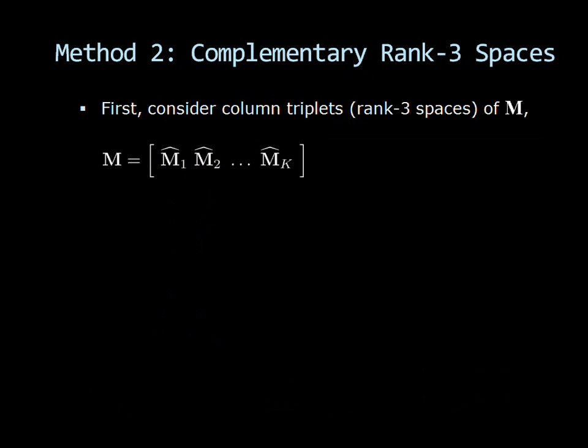To address this problem, we introduce a second representation of S, which we call complementary rank 3 spaces. First, we consider column triplets of M. Then, we can express W as the sum of products of a triplet in the corresponding basis shape.